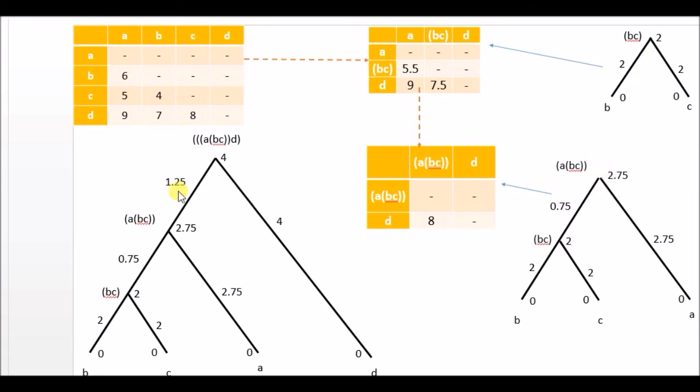So I add here 1.25 and the rest is 4, and I got a new edge for D. So this is the phylogenetic tree for this distance matrix.